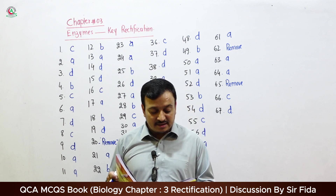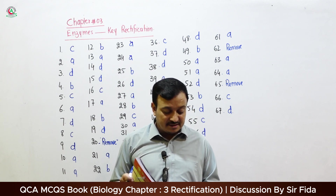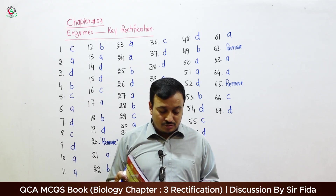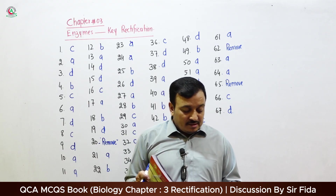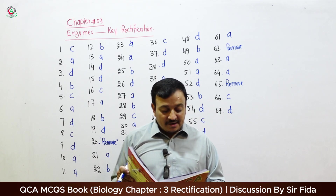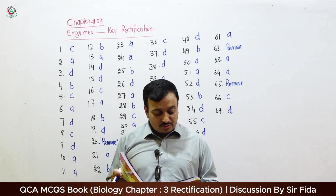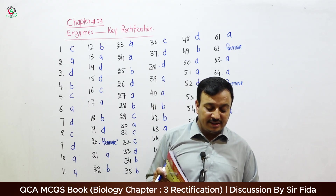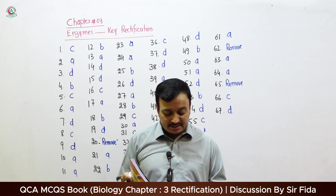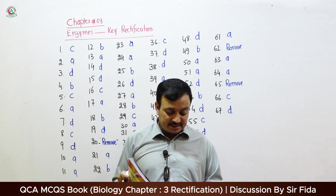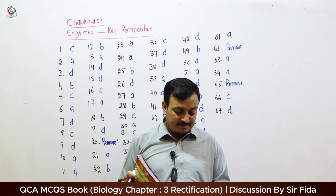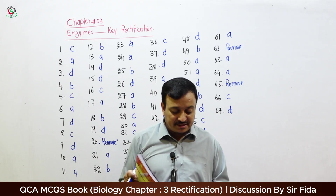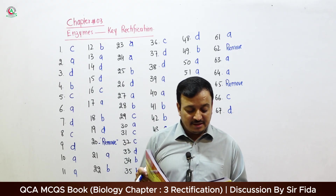Question 3: Which statement about enzyme is true? The correct answer is D: 'They are non-specific in their action' — this statement is NOT true. Question 4: Which one of the following enzymes is used to convert hydrogen peroxide into H2O and oxygen? The correct answer is B: Catalase enzyme.